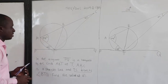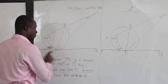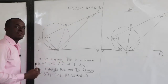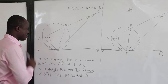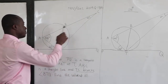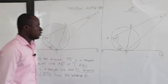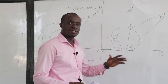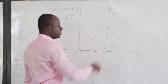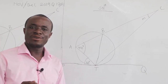This is WASSCE 2019, question number 13A, on circle theorems. In the diagram, PQ is a tangent to the circle ABT at T. A tangent touches a circle at a point, so it is touching at T. ABC is a straight line. TC bisects BTQ. We are asked to find the value of M. This is a tangent-chord relationship — AT is a chord and PQ is a tangent at T, and BT is also a chord.